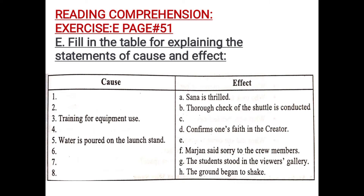As you can see in number one, the cause is not written — it's missing. But the result is given. The effect is given that Sana is thrilled, means Sana is excited. So, why was she so excited and thrilled? You have to write the cause — what made her so excited and thrilled.